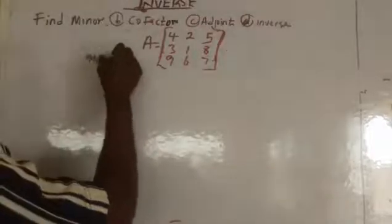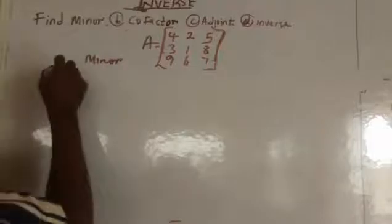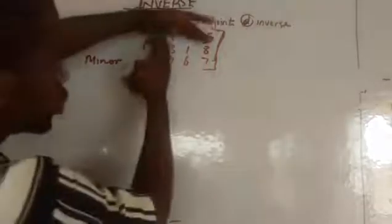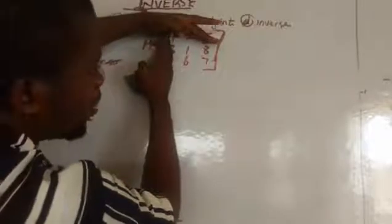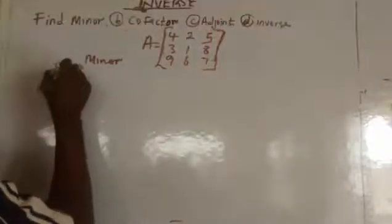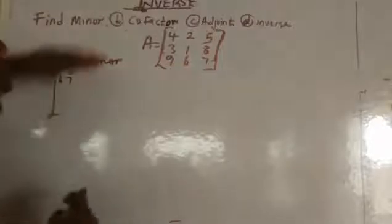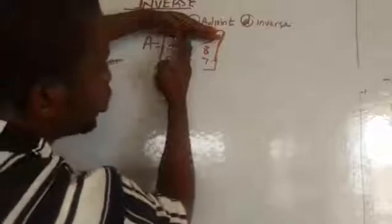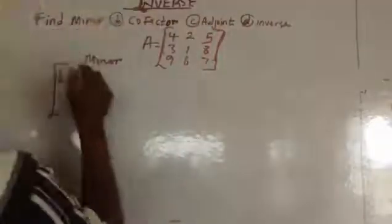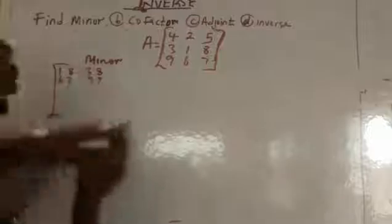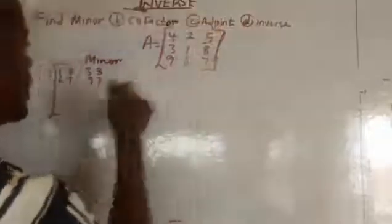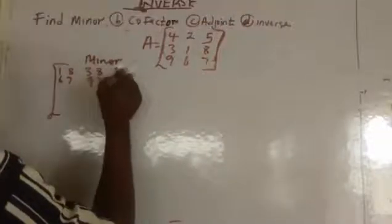To find the minor, we delete the first row and first column — we have 1867. Then maintaining the first row, we delete the first row and second column — we have 3897. Then delete the first row and third column — we have 3196.